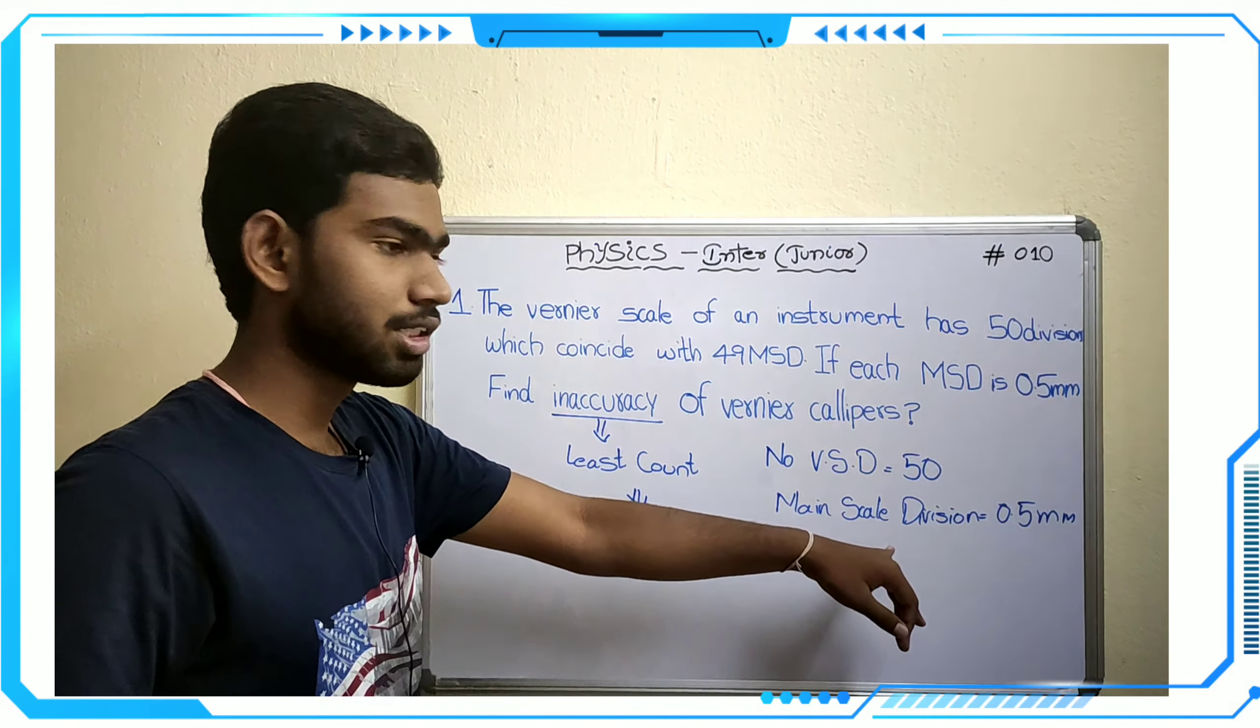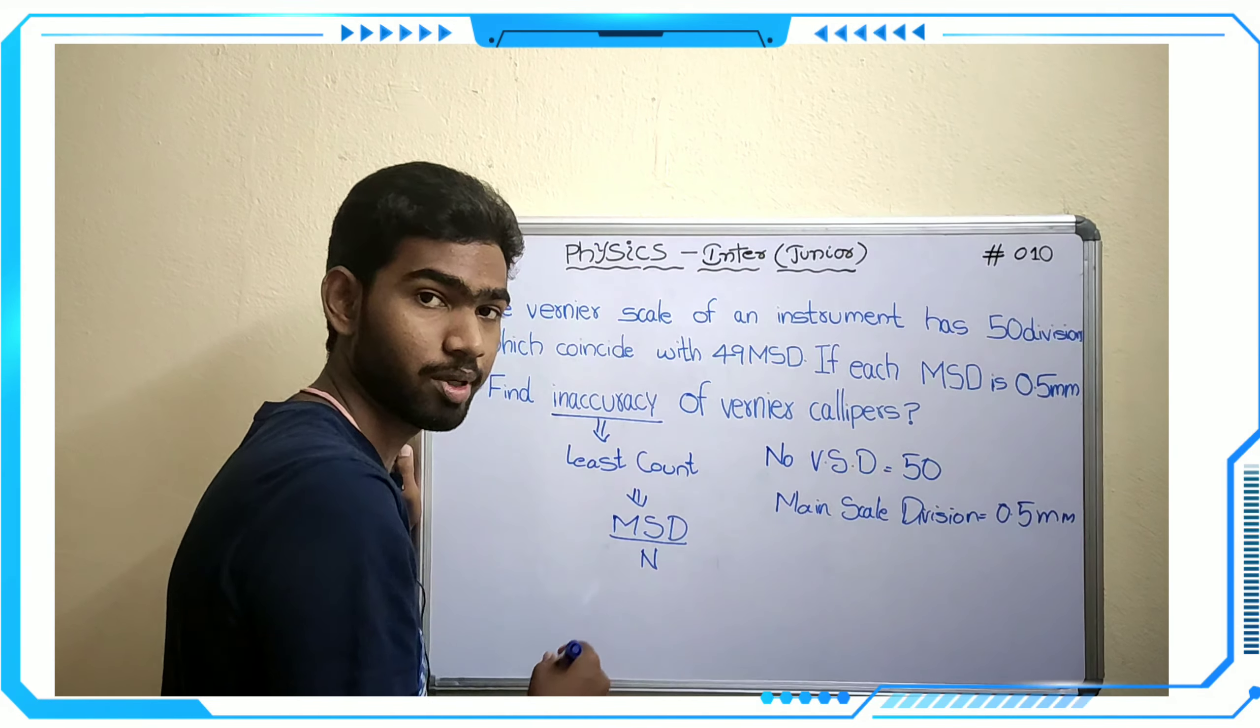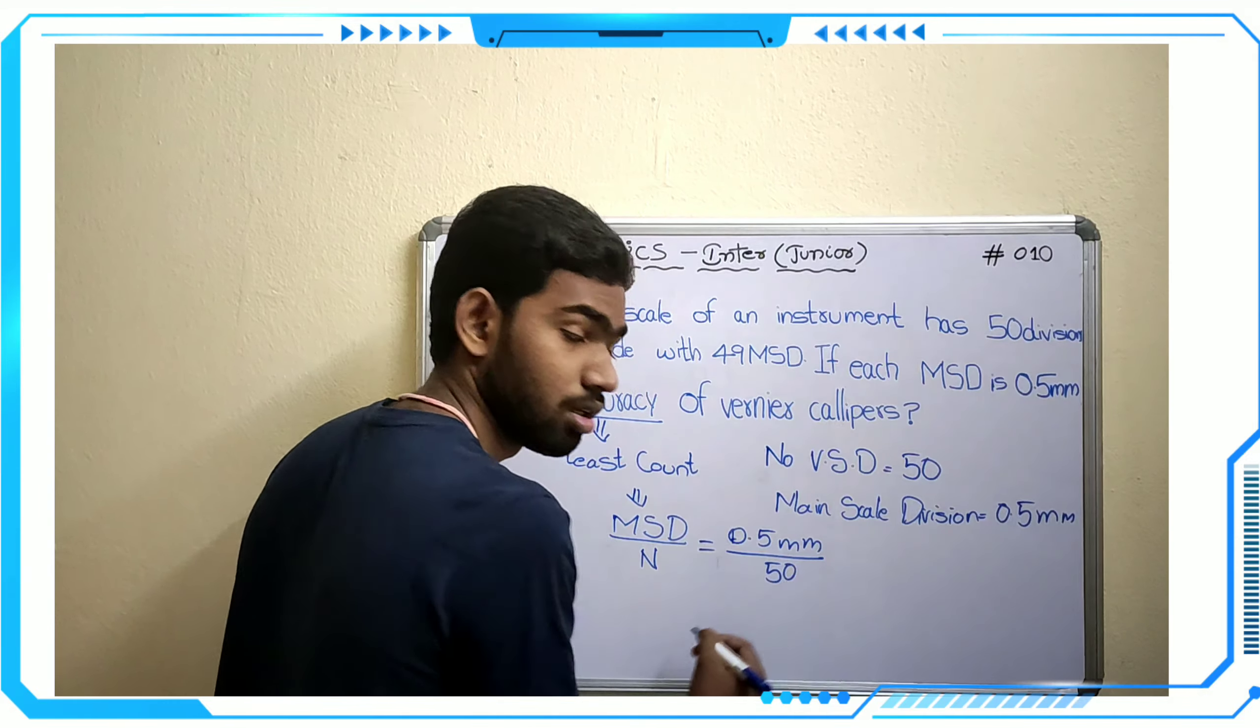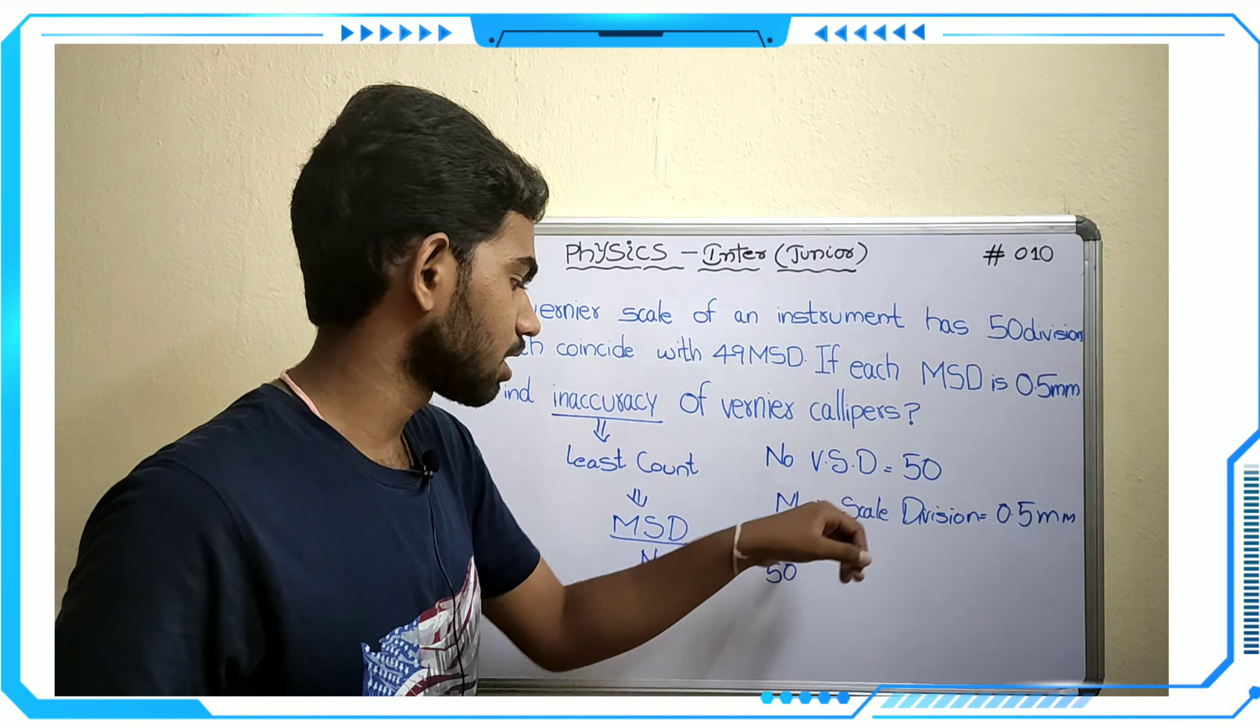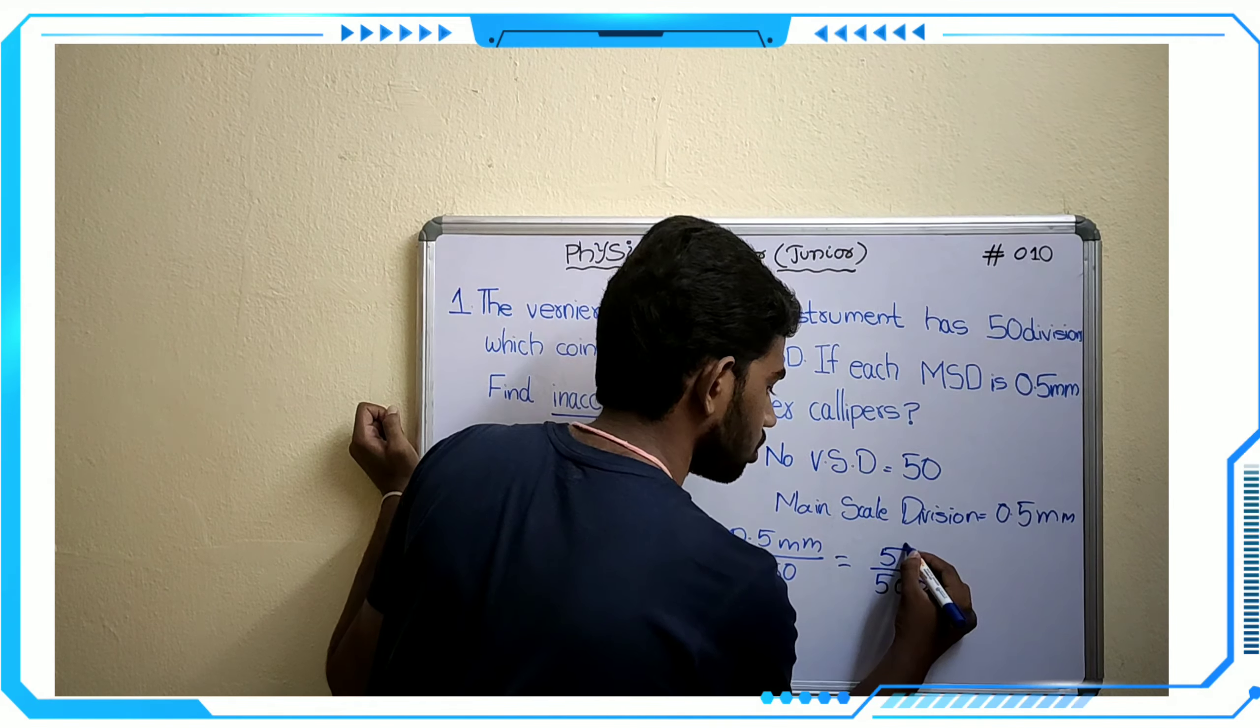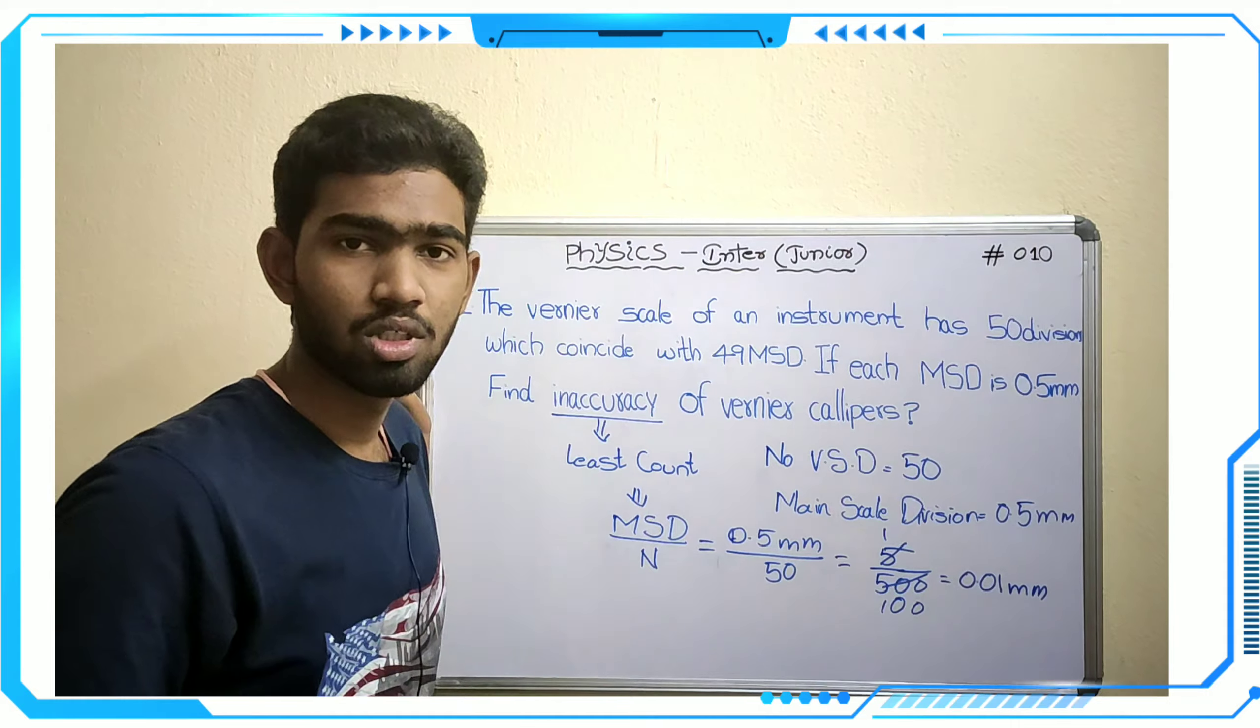The least count formula is one main scale division divided by number of vernier scale divisions, MSD divided by n. The calculation is 0.5 millimeters divided by 50. If you multiply upside and downside by 10, we get 5 by 500. We can cancel: 1 by 100 is 0.01 millimeters.